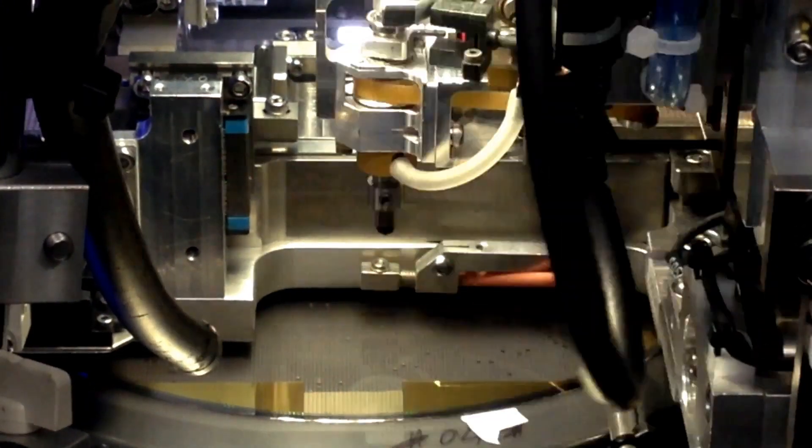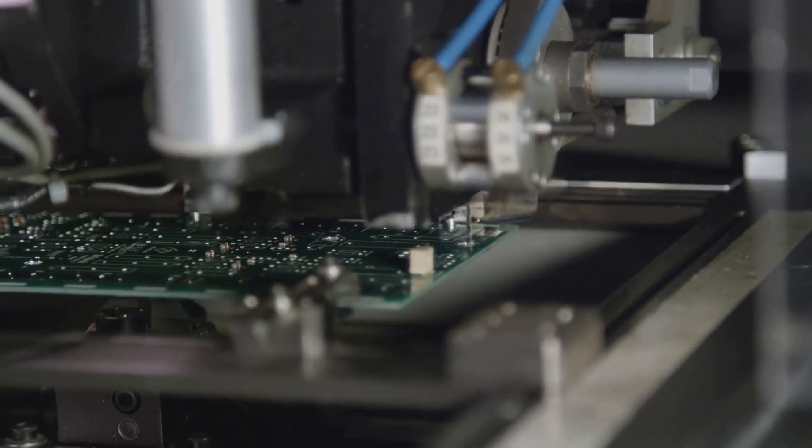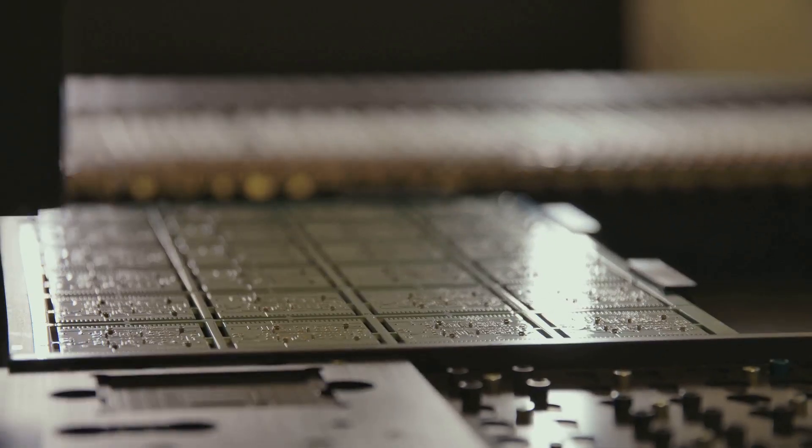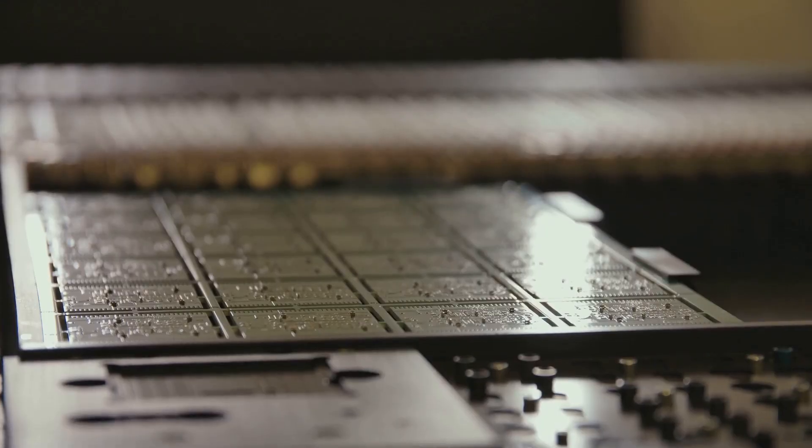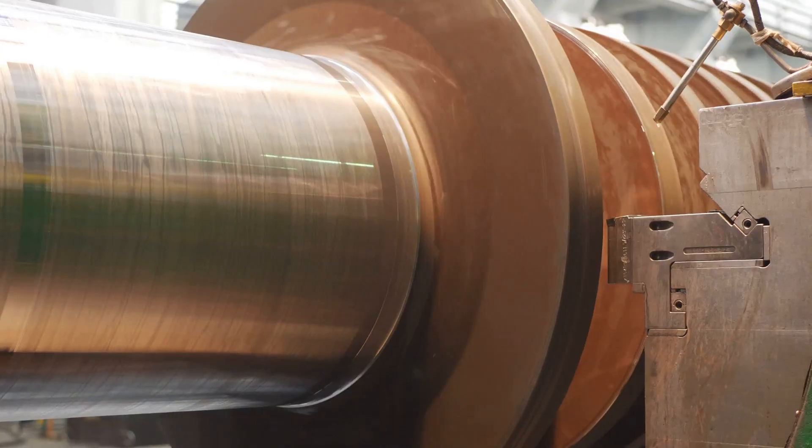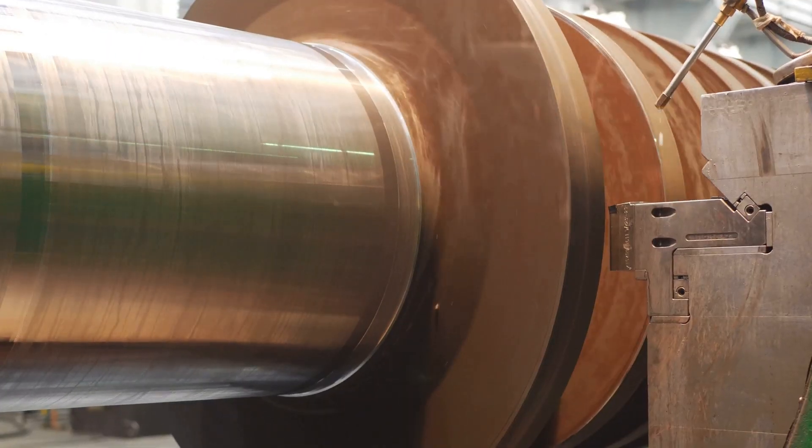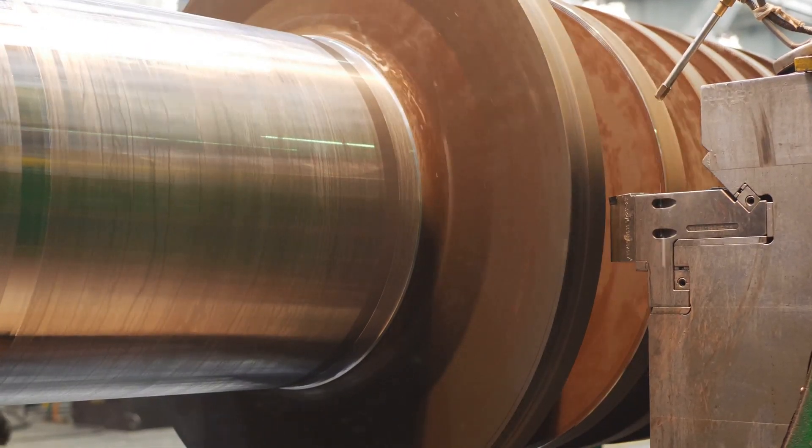EUV machines are engineering marvels representing the pinnacle of human achievement in technology and precision. They are the most complex and precise machines ever built by humans requiring years of research and development. Each machine costs around $380 million and weighs as much as two Boeing 747 airplanes, highlighting their immense scale and value.